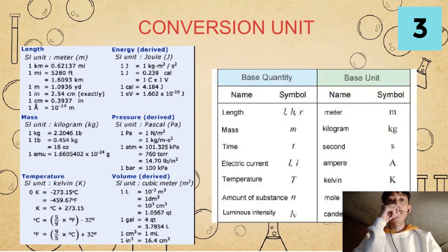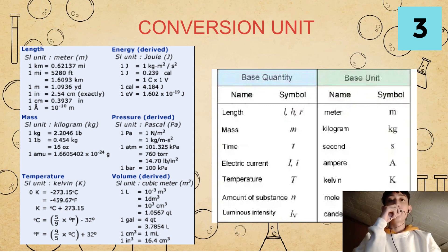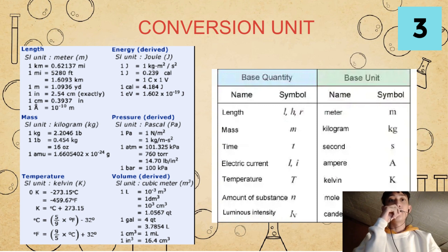For our volume, our SI unit is cubic meter. For every 1 liter, there is 10 raised to negative 3 m cubed, or 1 dm cubed, or 1,000 cubic centimeters. For every 1 L, there is also 1.0567 qt. For every 1 gallon, there are 4 qt or 3.754 liters. For every 1 cubic centimeter, there is 1 milliliter. For every 1 cubic inch, there are 16.4 cubic centimeters.